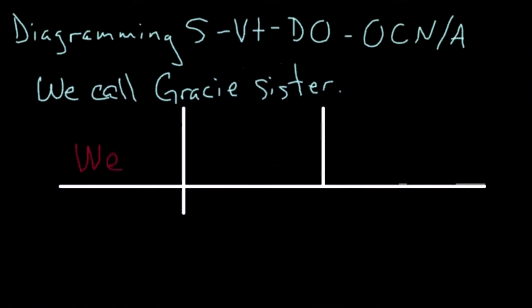We is the subject. Call is the verb. Gracie is the direct object. And sister is a noun which renames the direct object.